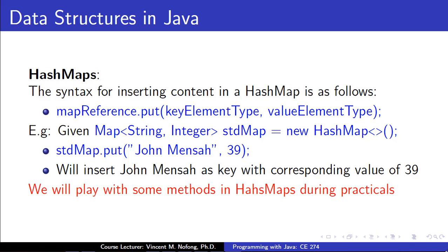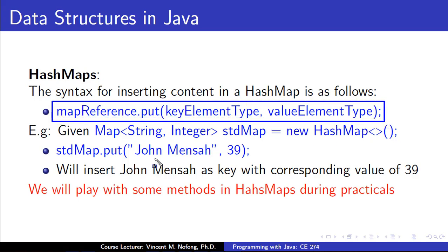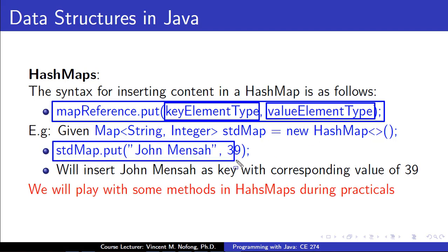Assuming we have created our HashMap and we want to insert content into it, once we have created the HashMap and given it a unique name, we need to call the name of the HashMap followed by .put(). So in our previous example, assuming the name is mapReference, we use mapReference.put() specifying what element we are storing as the key and what element as the value. In our example where we created a studentMap, if we say studentMap.put('John Mensah', 89), we insert John Mensah as the key and 89 as the value. We'll play with more of the HashMap methods during our practicals.